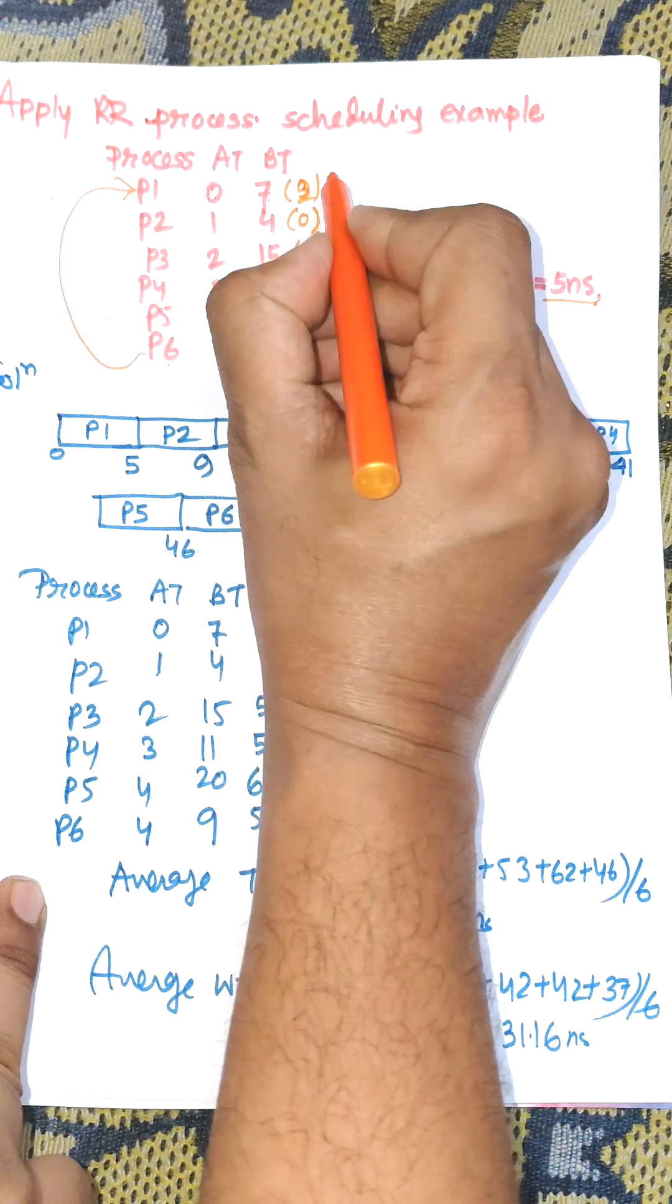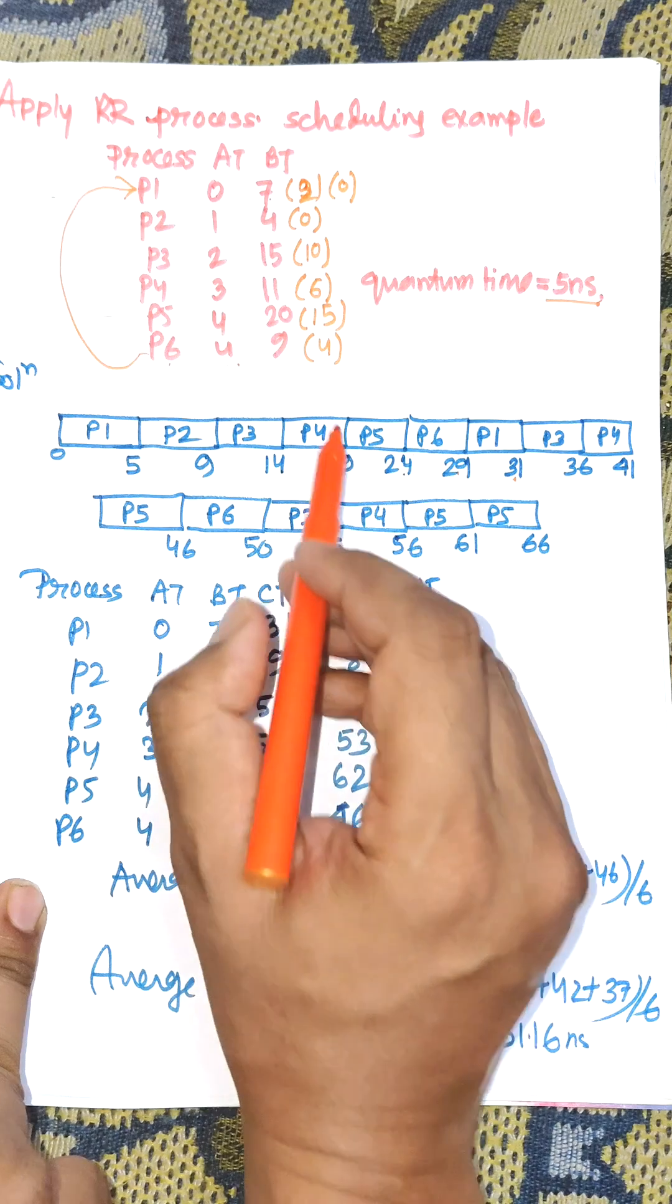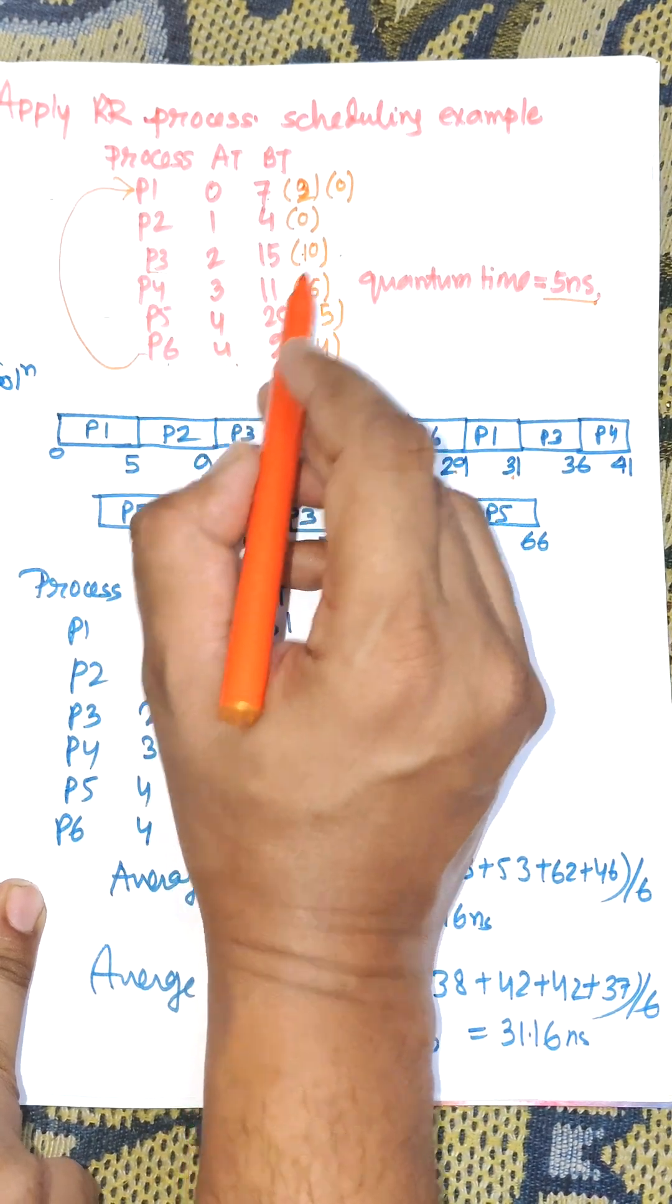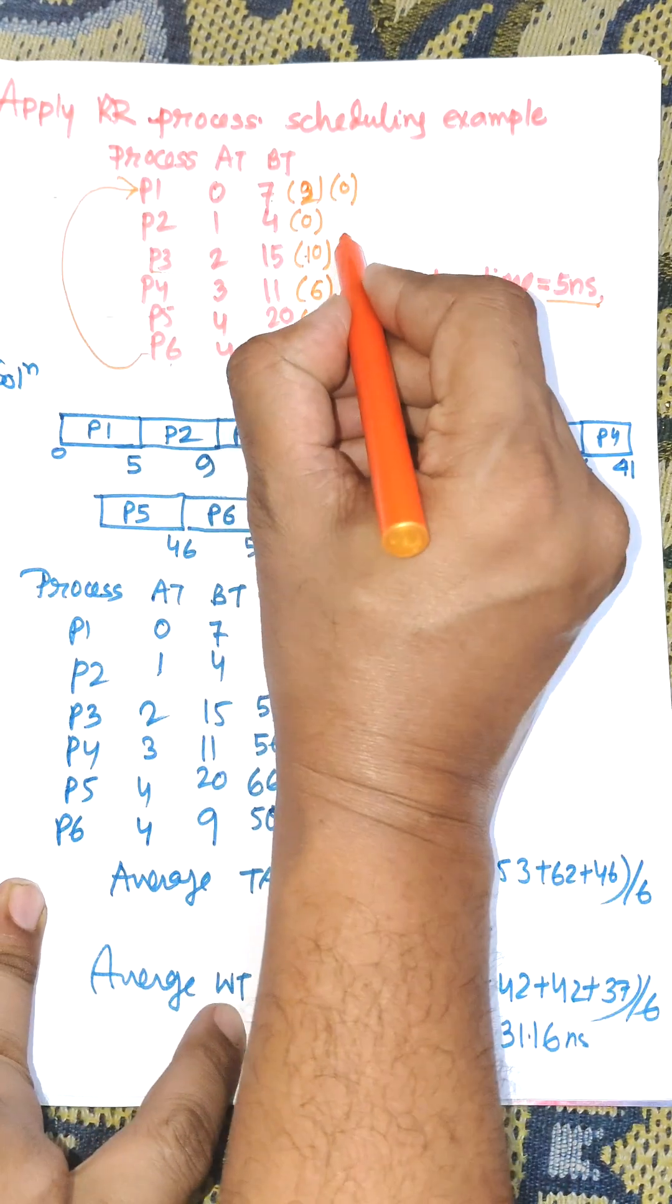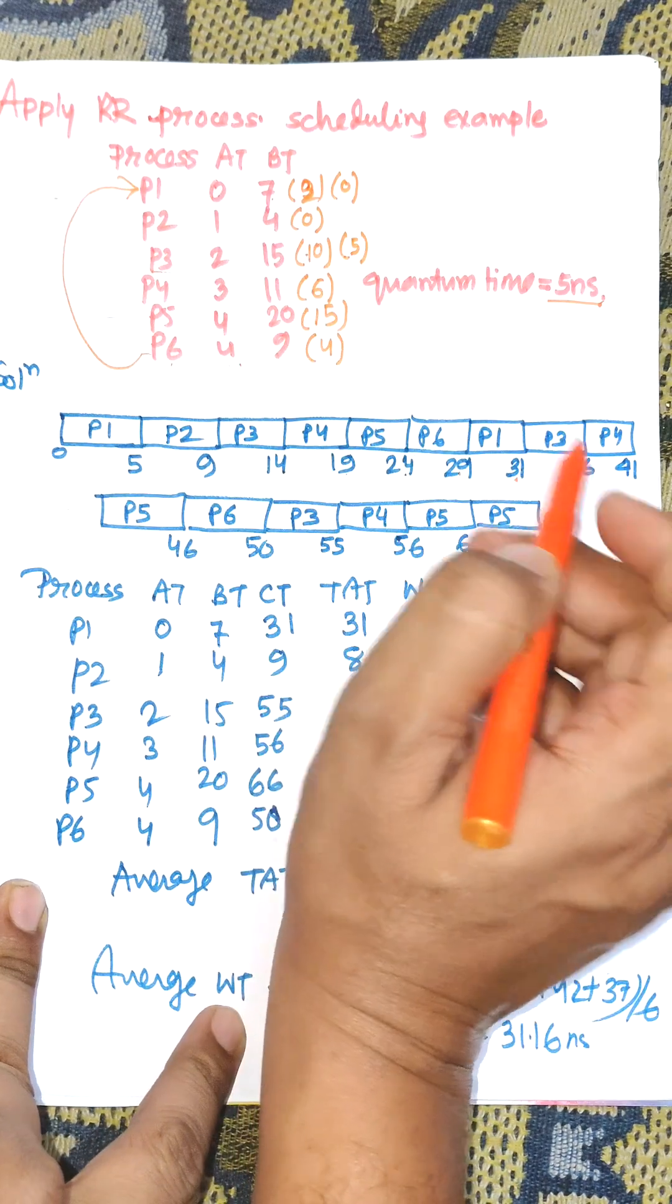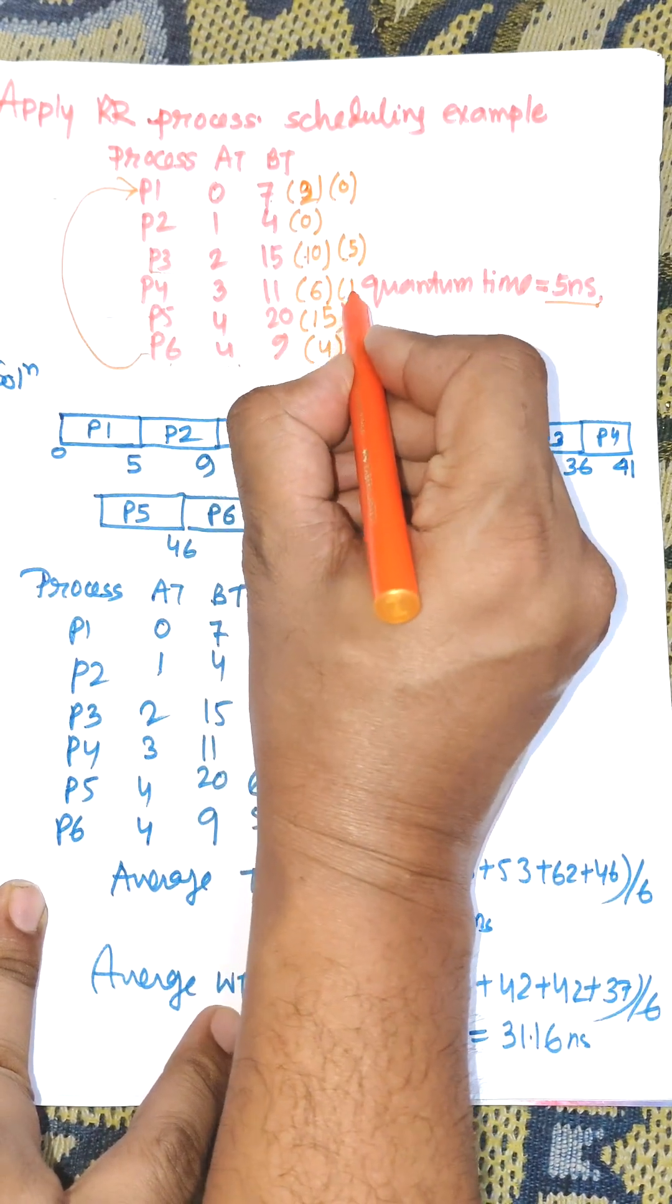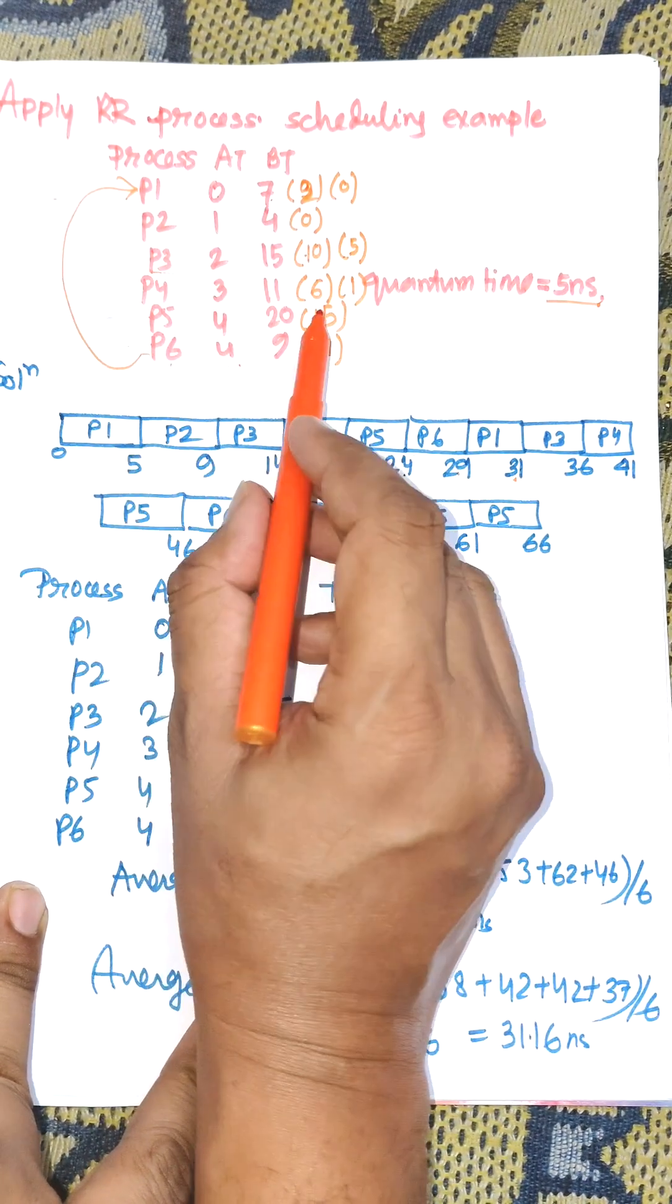Now control goes to P3. P3 will be executed for 5 nanoseconds, with 5 remaining after that execution. P5 is executed for 5 nanoseconds, with remaining time 10.